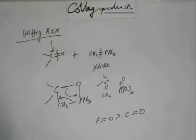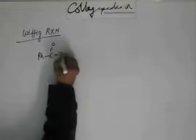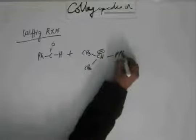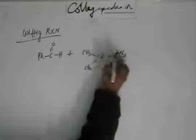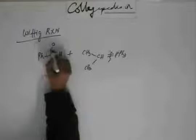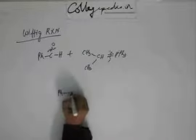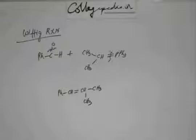Let's quickly practice some problems to learn to write the product for the Wittig reaction. Suppose this is the ylide and this is the carbonyl compound — what will be the product? What you do is treat the minus and plus as a double bond. You break this bond from the carbonyl, you break this bond from the ylide, and merge both carbons together. This is the product of this particular Wittig reaction. That's how you write the Wittig reaction.